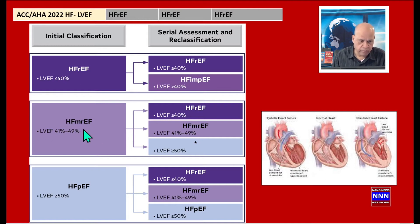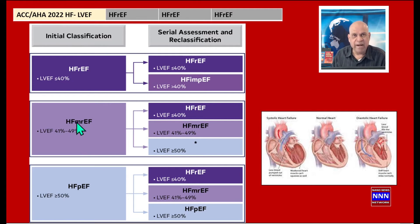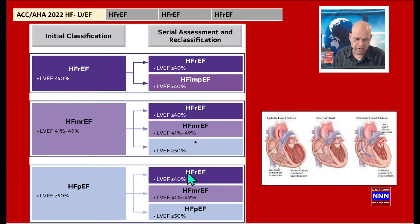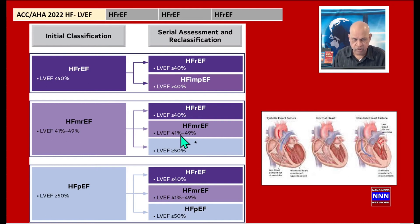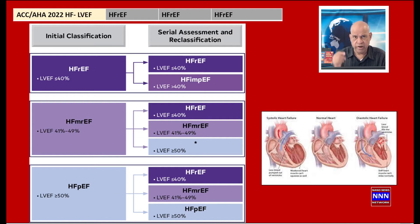There is also an intermediate group introduced in the ACC/AHA 2022 heart failure guidelines: heart failure with mildly reduced ejection fraction, or HFmrEF. This group has an ejection fraction between 41 and 49 percent. A left ventricular ejection fraction of 41 to 49 should not be interpreted as normal — it is abnormal and is an early sign of a decompensating heart, particularly true in patients with hypertension or aortic stenosis.